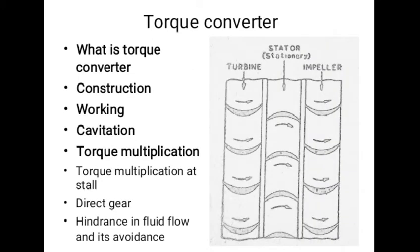The turbine blade angle is such that it changes the direction of oil flow, so that when it comes out of the turbine blade, its direction is effectively backward. If there were no stator and it were to enter the impeller directly, it would push the impeller in the opposite direction and thus cause loss of power.